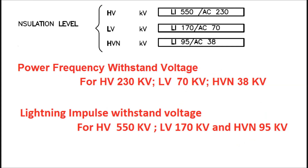The next parameter in the nameplate is the insulation level of the HV side, LV side, and HV neutral. There are two types of insulation: power frequency withstand voltage and lightning impulse withstand voltage. For the HV side, the power frequency withstand voltage is 230 kV; for the LV side it is 70 kV; and for the HV neutral it is 38 kV.